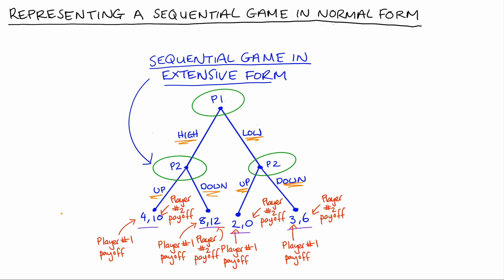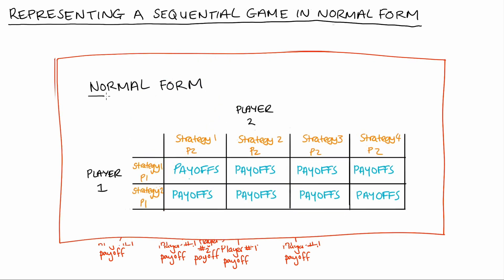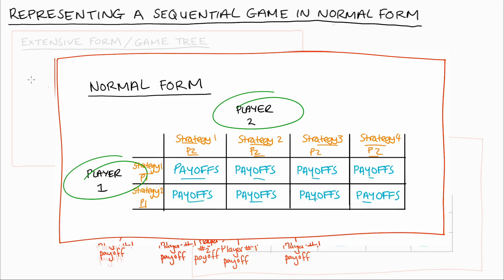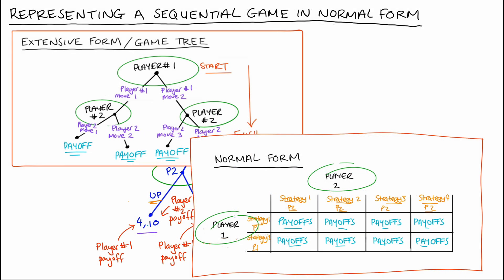In contrast, if we have a normal form representation of a game, it's most often achieved by drawing a table. This form describes the players of the game, the strategies available to each player, and the payoffs associated with each possible outcome. The tricky thing about moving from extensive form to normal form is that the strategies of our players are not obviously reported to us in a game tree, but we need those strategies in order to put our game in normal form.